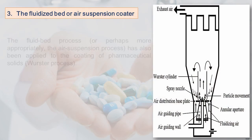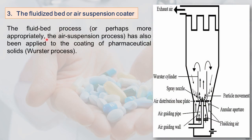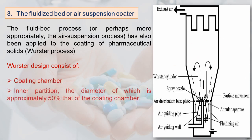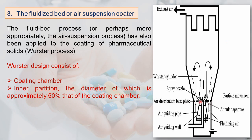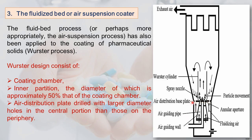The fluidized bed or air suspension coater, also called the Wurster process, has been applied to coating pharmaceutical solids. The Wurster design can be top spray, bottom spray, or tangential spray. The bottom spray with the Wurster tube is called the Wurster design, mainly used for coating tablets. It consists of a coating chamber, an inner partition with diameter approximately 50% of the coating chamber, and an air distribution base plate.